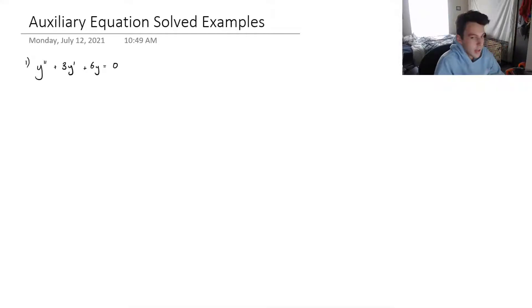So this one, we can see that we've got a second order ordinary differential equation, constant coefficients, it's homogeneous, so it's got equal to zero on one of the sides. So this is indicative that we can use the auxiliary equation to solve this.